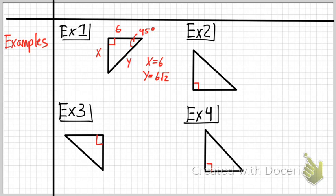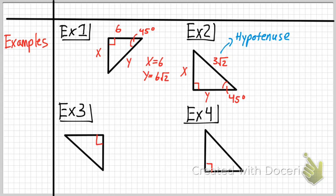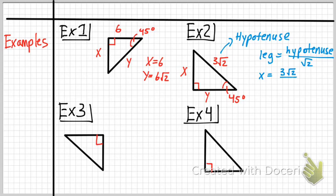For example 2, we have a 45-degree angle and x and y are missing. I'm given 3√2, which is the hypotenuse because it's directly across from the right angle and it's the longest side of the triangle. So x and y are the legs. A leg equals the hypotenuse divided by the square root of 2, so x equals 3√2 divided by √2, which equals 3. And y equals 3 as well.